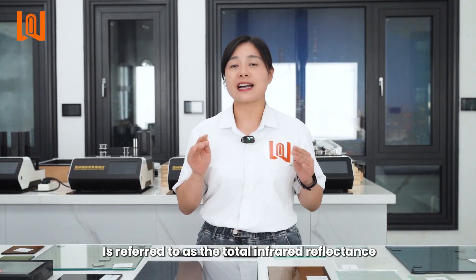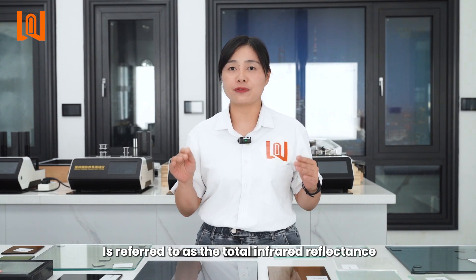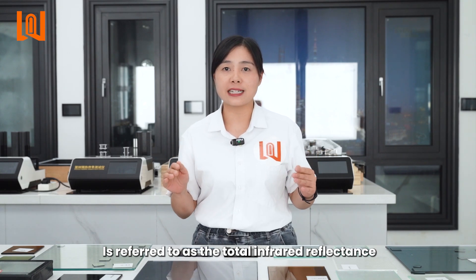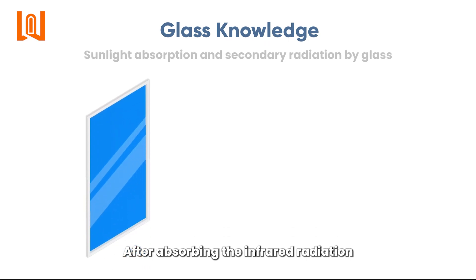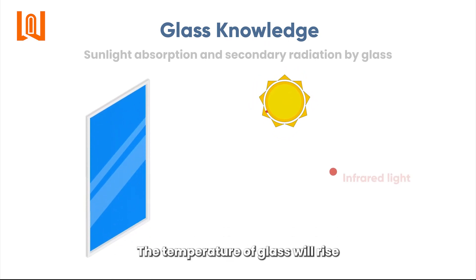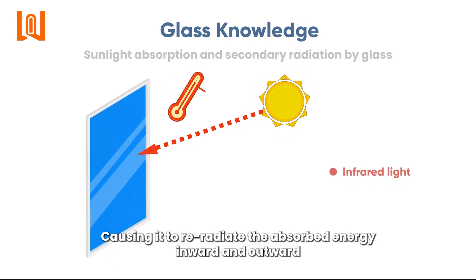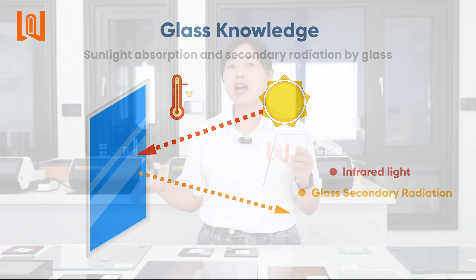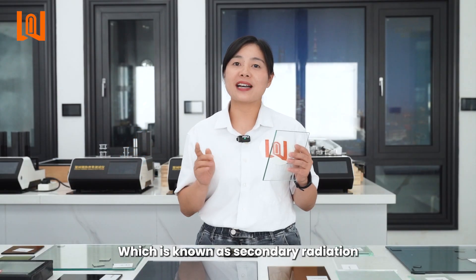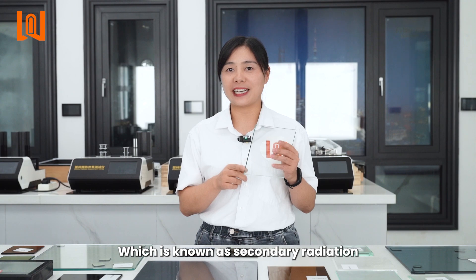is referred to as the total infrared reflectance. After absorbing the infrared radiation, the temperature of glass will rise, causing it to re-radiate the absorbed energy inward and outward, which is known as secondary radiation.